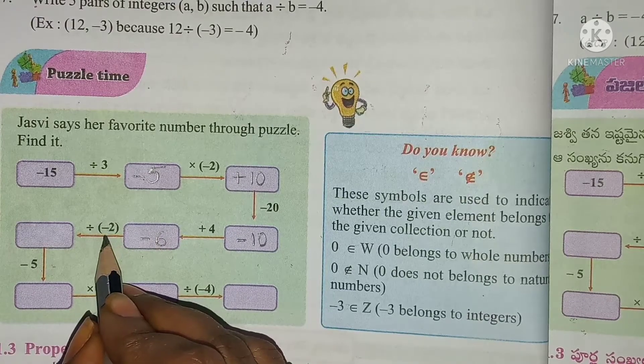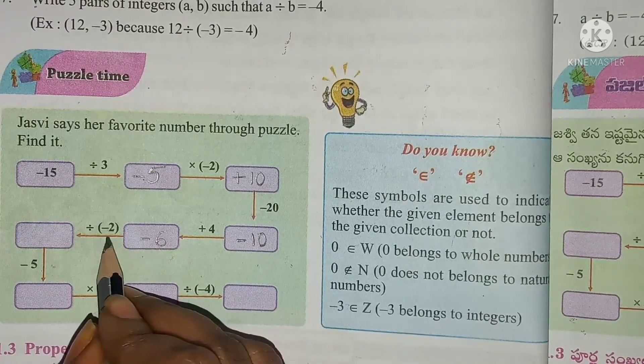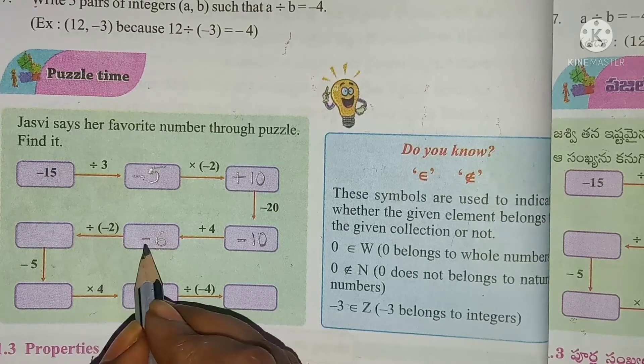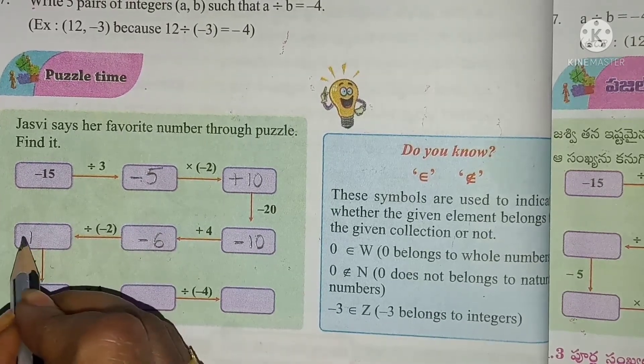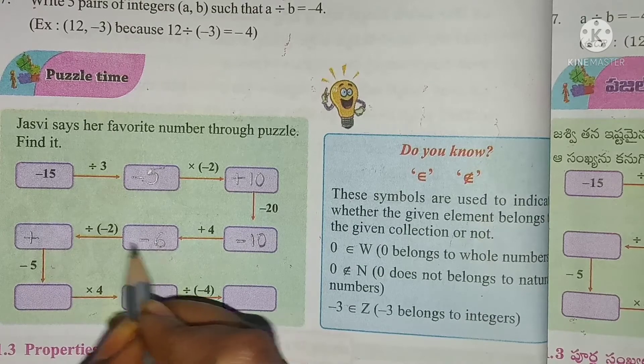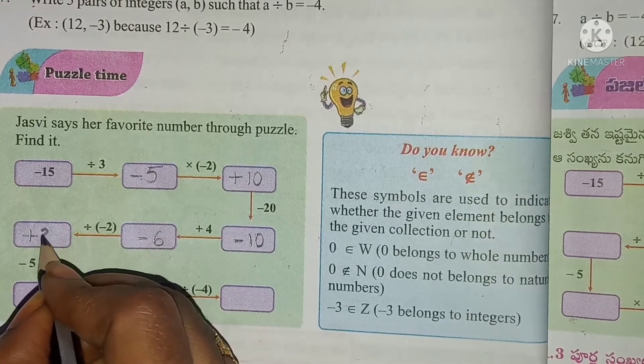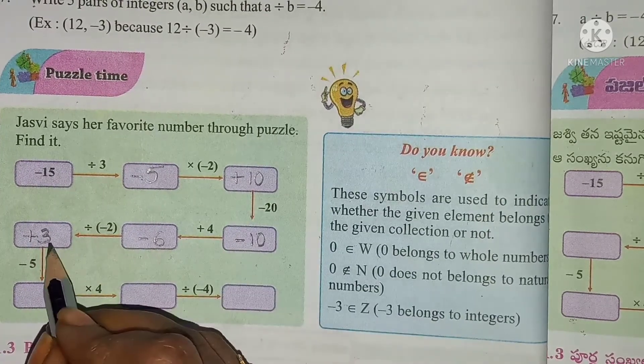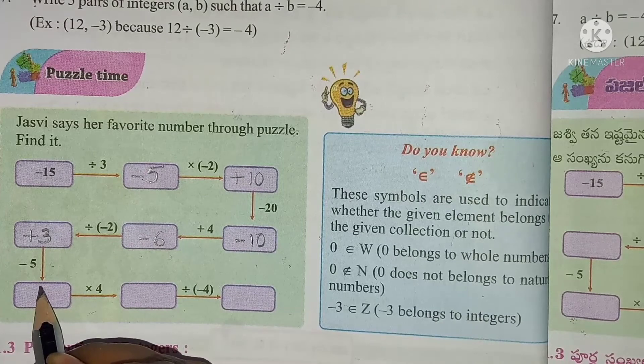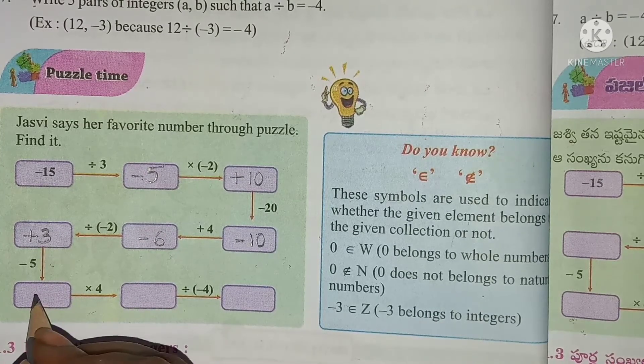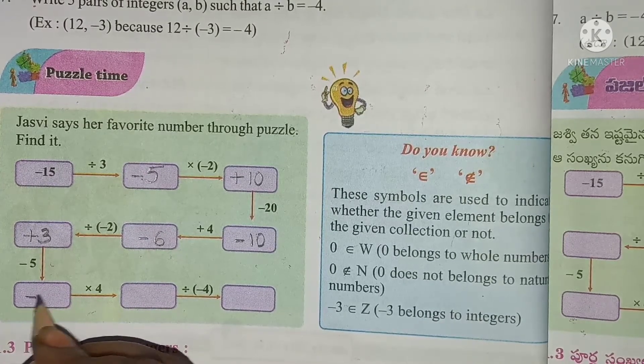After that, we should divide minus 6 by minus 2. Minus divided by minus is plus, 6 by 2 is 3. Then 3 minus 5, how much we get? Minus 2.